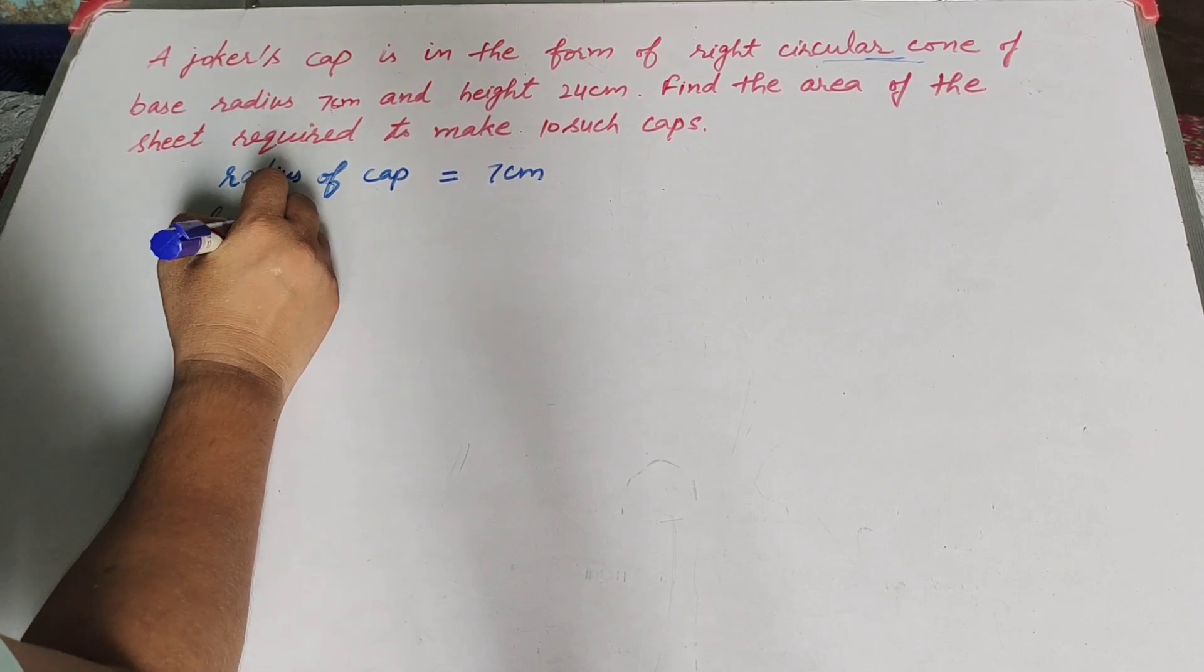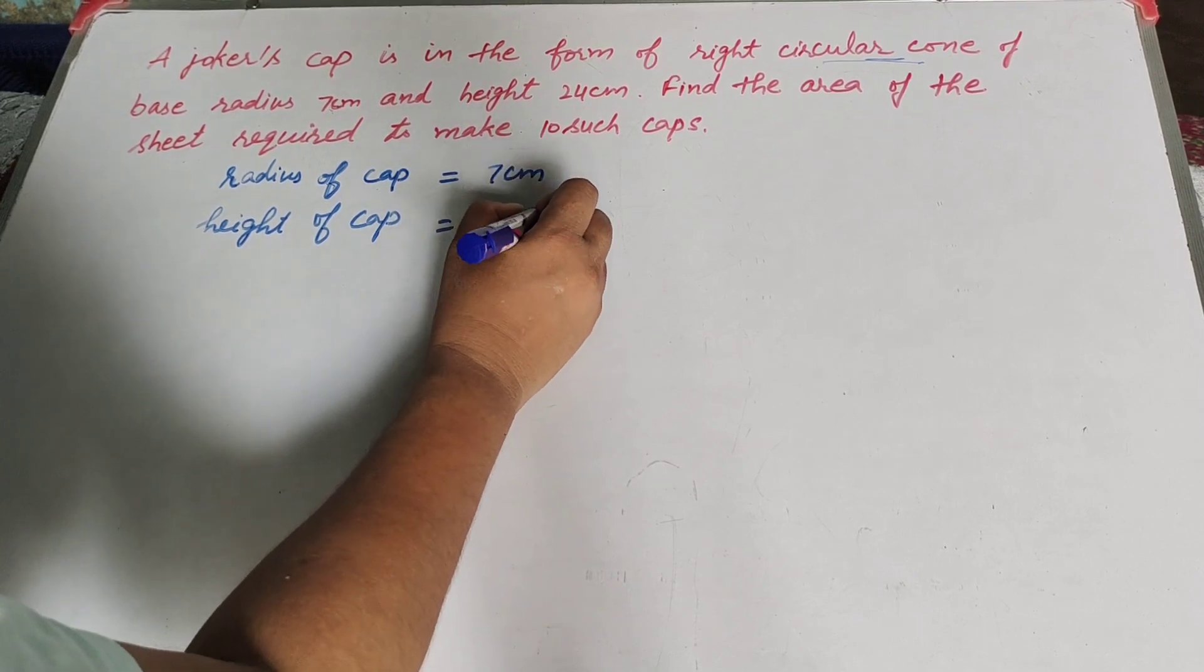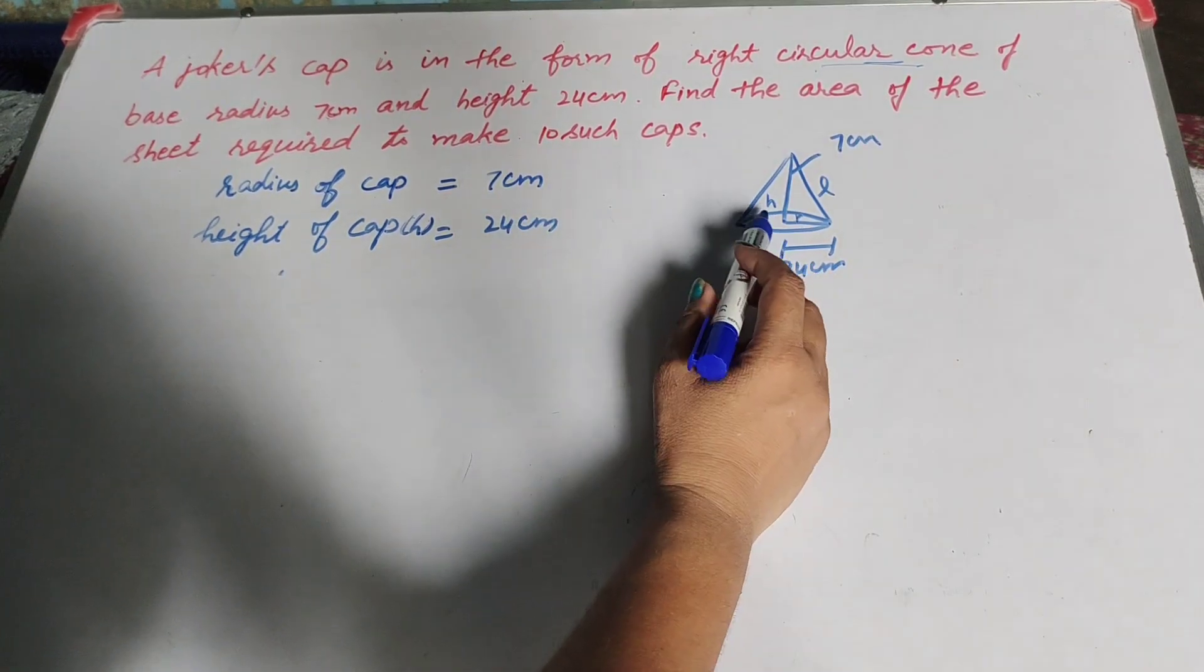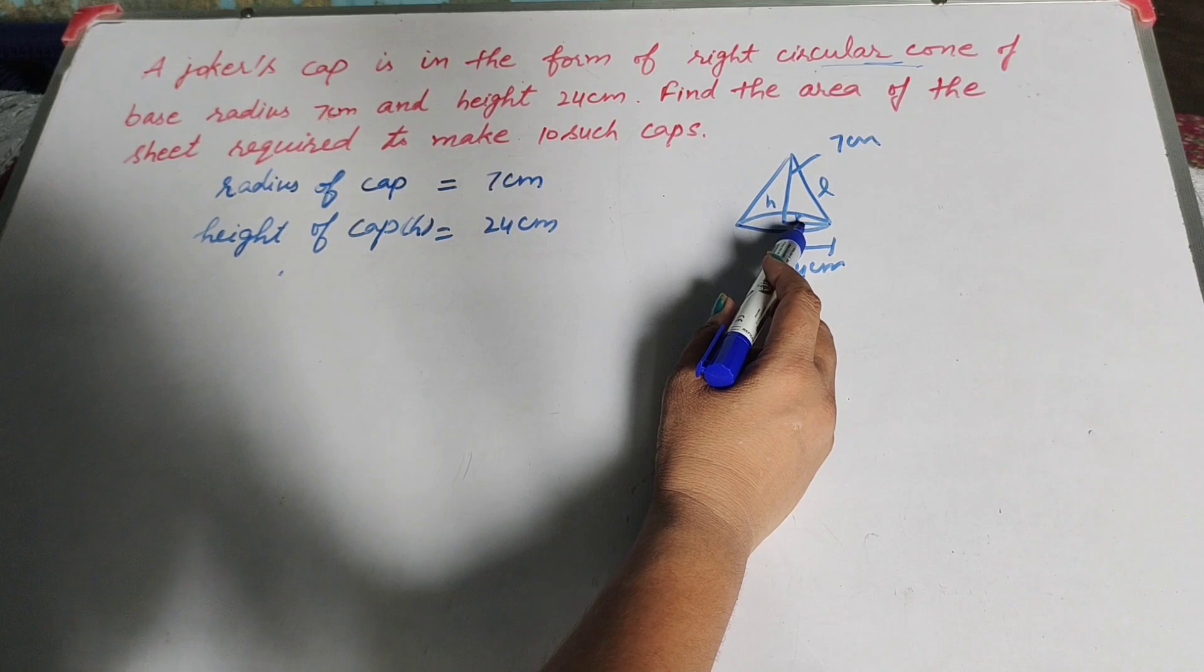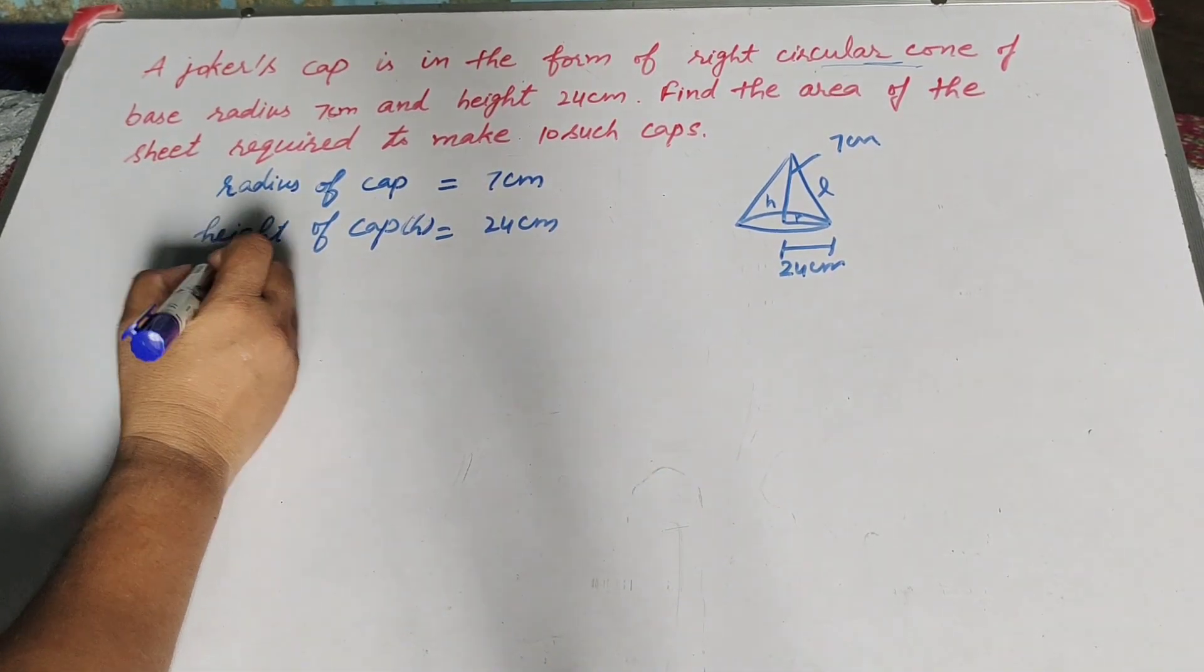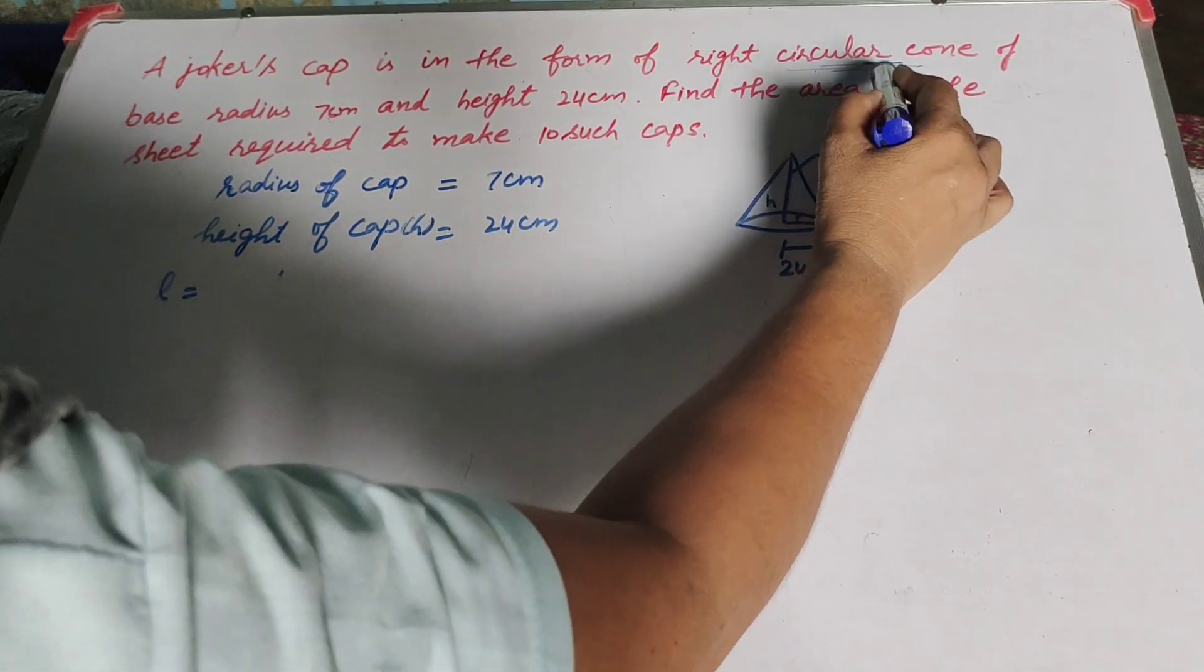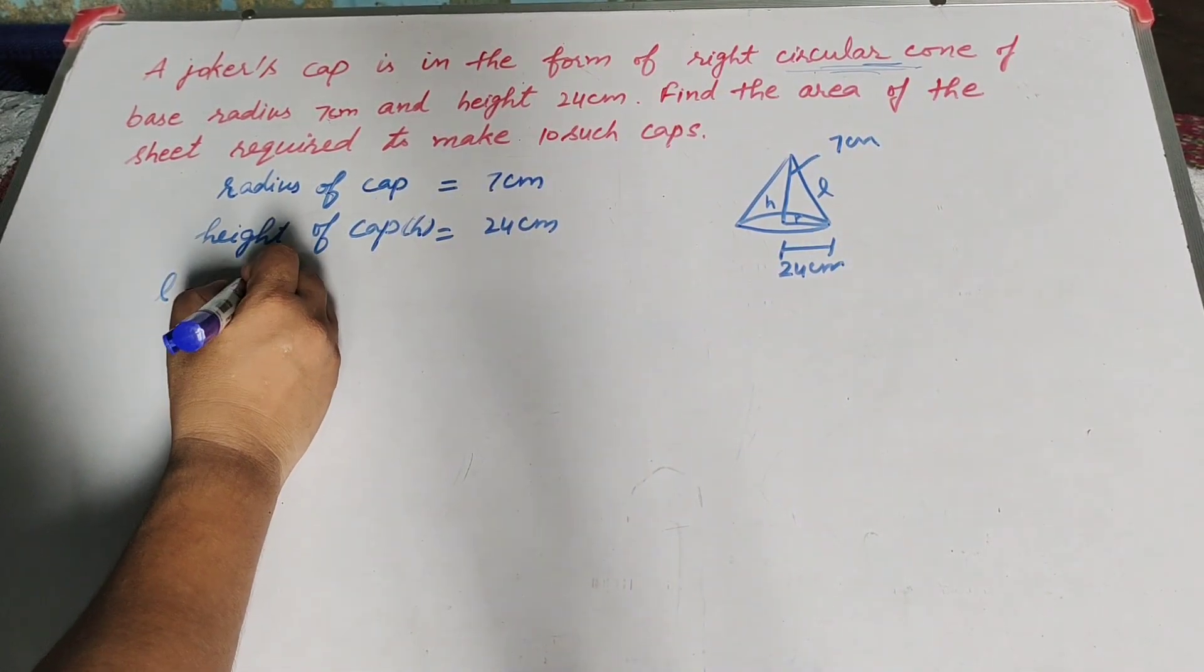Height of cap is equal to 24 cm. This is the height, radius, and slant height. So first we find the slant height by using Pythagoras theorem because it is given in the question this joker cap is in the form of a right circular cone.